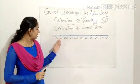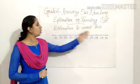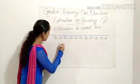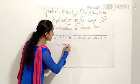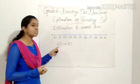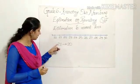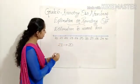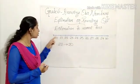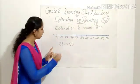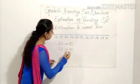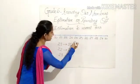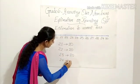Let me ask you one thing: the number 21 — is it near to 20 or 30? It is very clear from the number line that 21 is near to 20. That means I can estimate 21 to 20 for easier calculation. If you see 21 in any question, you can estimate it to 20. What about 22? 22 is also near to 20, not 30. Same way, 23 is also near to 20, and 24 is also near to 20.